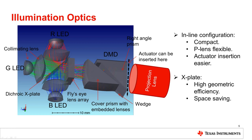This inline configuration not only enables compact size but also folds the illumination to the opposite side of the projection lens, allowing enough space to accommodate large-sized projection lenses such as ultra-short throw lenses. The open space also makes the insertion of an actuator easier when considering enhancing the resolution.